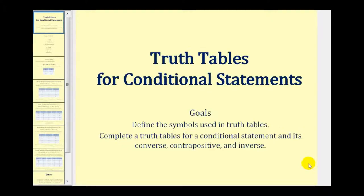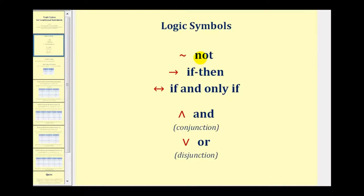Welcome to a lesson on truth tables for conditional statements. Here are the most common symbols used for logic in truth tables. We have negation or not, if-then, if and only if, conjunction or and, and disjunction or or.